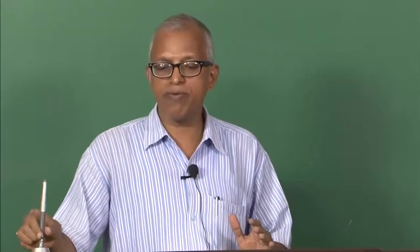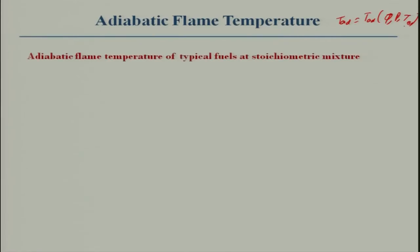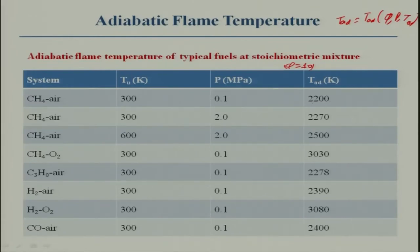Adiabatic temperature will be a function of initial pressure and initial temperature. For a typical fuel at stoichiometric mixture — phi equal to 1 — if you look at methane with an initial temperature of 300 K at 0.1 MPa, you will get something like 2200 K.